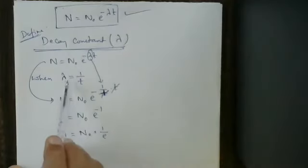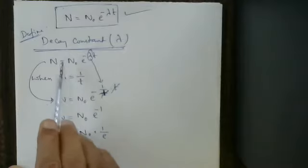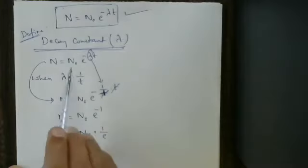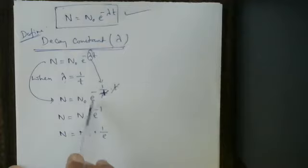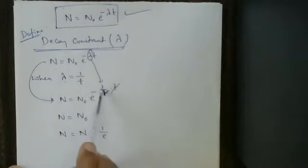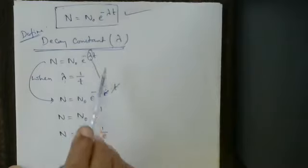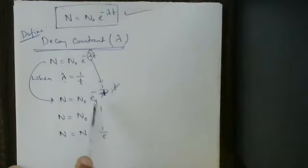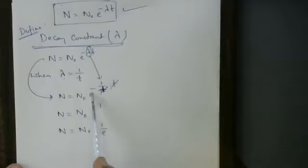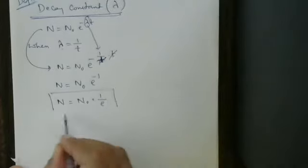Let us consider lambda is equal to 1 divided by t. This formula becomes N equals N₀ · e to the power of minus lambda times t. Substituting 1/t for lambda, the t's cancel, therefore N equals N₀ · e to the power minus 1. This can also be written as N equals N₀ times 1/e.